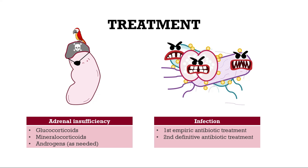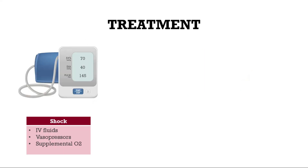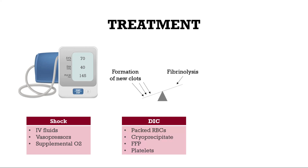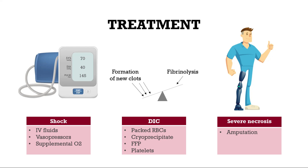Shock can be treated with IV fluids, vasopressors such as noradrenaline, and supplemental oxygen. DIC can be treated with packed red blood cells, cryoprecipitates, fresh frozen plasma, and platelets. In cases of severe necrosis, amputation could be necessary.